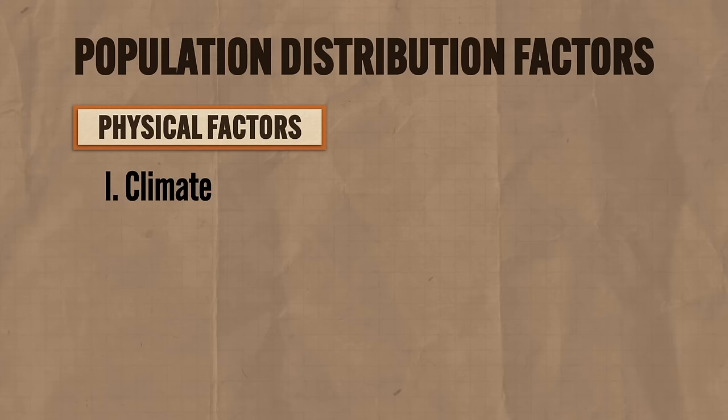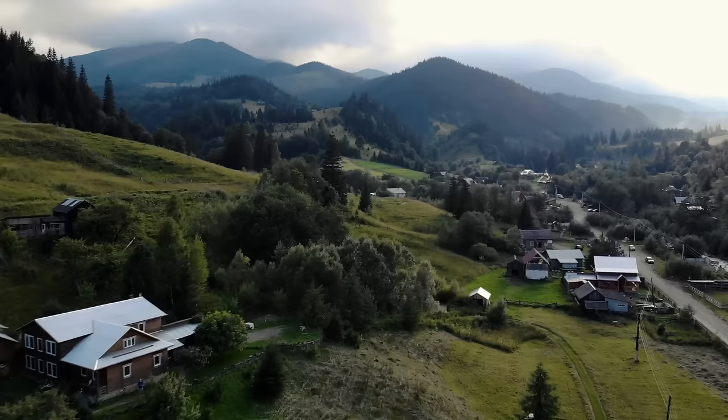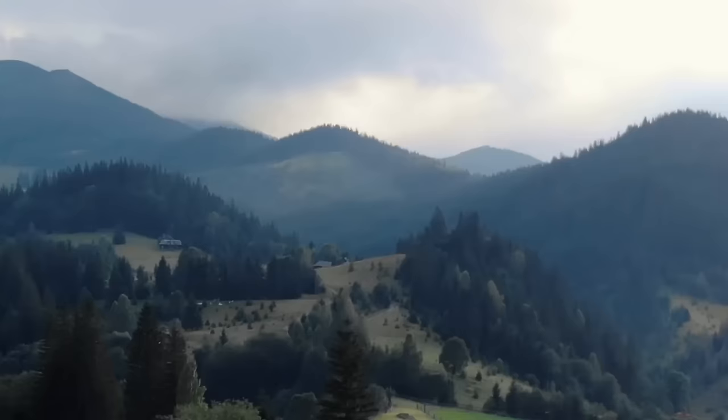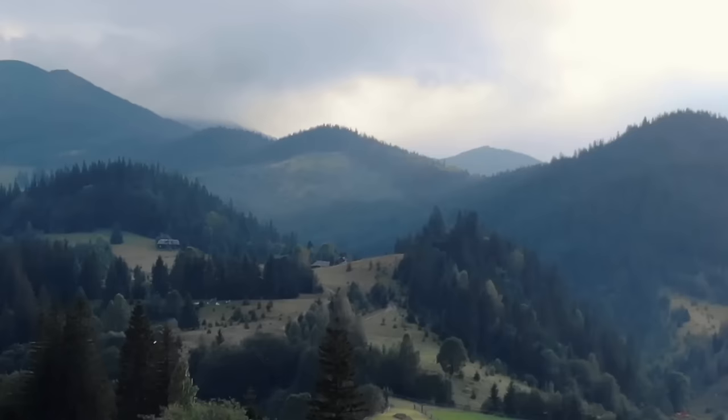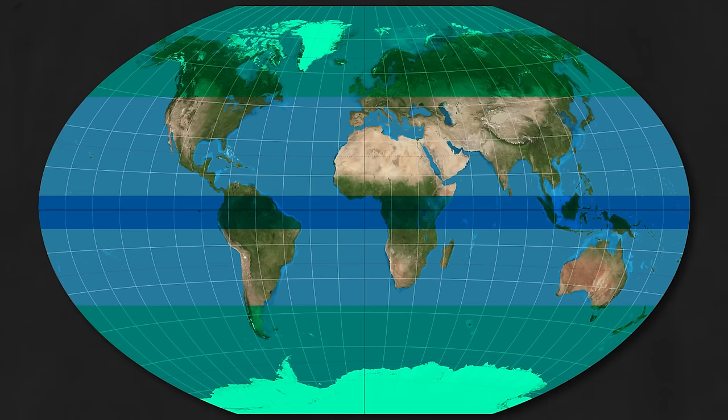A second physical factor in population distribution is landforms. In general, humans like to live in lowland areas because it's easier to build and easier to farm. Mountainous areas tend to be sparsely populated — higher elevations bring challenges like cold temperatures, minimal food, and lack of breathable air. But this is only true in the middle and higher latitudes. In places close to the equator, some mountainous regions can be highly populated precisely because they're cooler and more temperate.